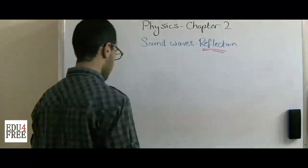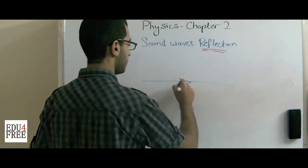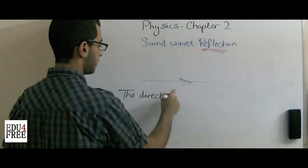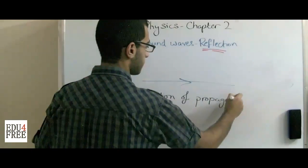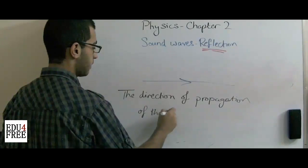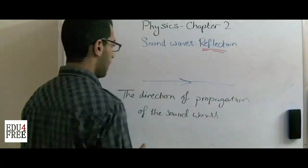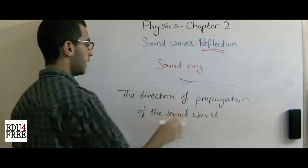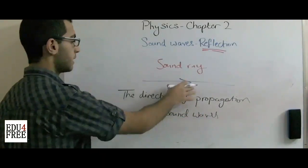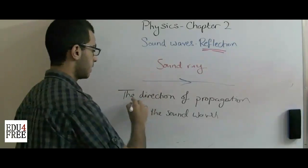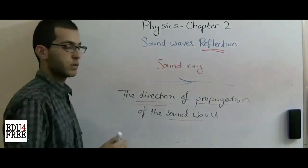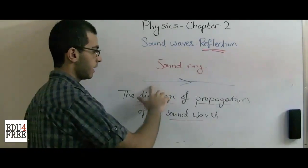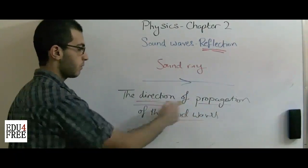Finally, this arrow that we draw represents the direction of propagation of the sound wave and it's called the sound ray. This sound ray doesn't express the sound wave itself, but it only expresses the direction of propagation of this sound wave, because we have just said that sound waves are transverse waves which travel in the form of compressions and rarefactions, so we cannot draw them in the form of an arrow, but this arrow only detects the direction of propagation of the sound waves.